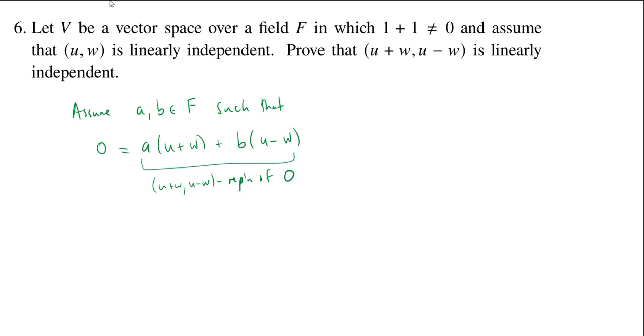So I have a (u plus w), (u minus w) representation of 0. But I could distribute this and write it actually as a linear combination of u and w. So how many u's do I have? I have a times u and I have b times u. So I have (a plus b) u's. And how many w's do I have? I have a w's and I have minus b w's. So this will be (a minus b) times w. And so this now is a (u, w) representation of 0.